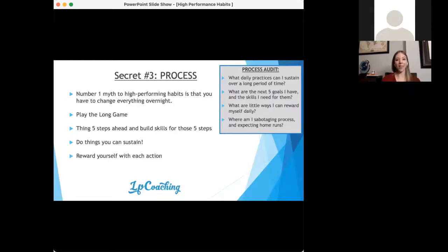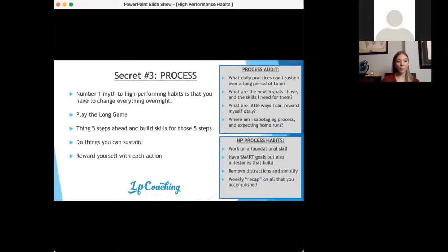Let's look at a process audit to become more masterful at being in process. Take a look at the daily practices that you can take on, that you can sustain for a long period of time, like flossing or making your bed or reading one page in a personal development book every day, or meditating for five minutes, or going for a 10-minute walk. What are the next five goals I have and the skills I need for them? What are the little ways I could reward myself daily? And look at where you're sabotaging process by expecting home runs. For people who are troubled by the list making, this is usually it. You're expecting home runs. The point in a list isn't to get through everything all the time.